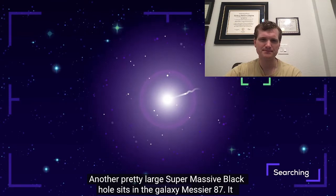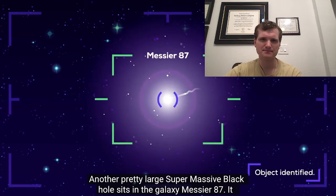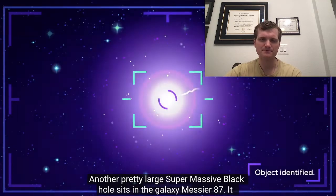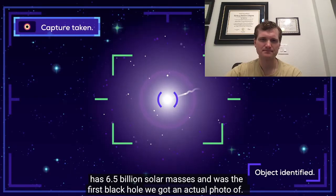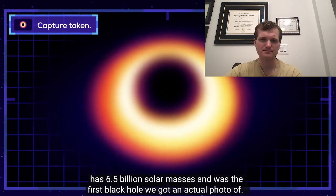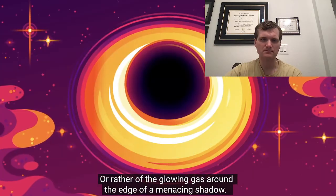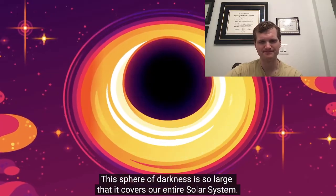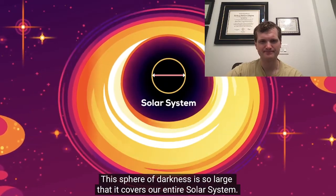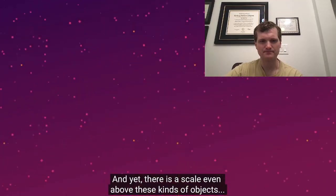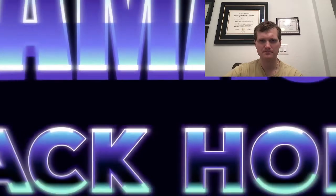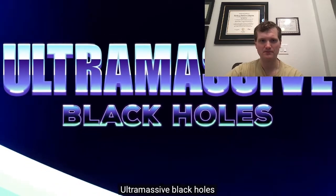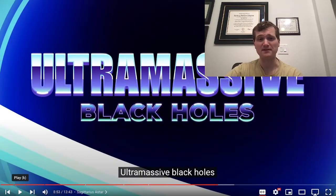Another pretty large supermassive black hole sits in the galaxy Messier 87. It has 6.5 billion solar masses and was the first black hole we got an actual photo of, or rather, of the glowing gas around the edge of a menacing shadow. This sphere of darkness is so large that it covers our entire solar system. And yet, there is a scale even above these kinds of objects. Ultramassive black holes. I have never heard of ultramassive. That is a cool name and a cool font, though.